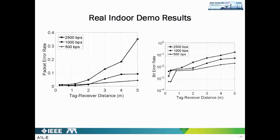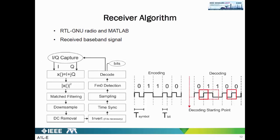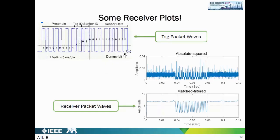We have two plots showing packet error rate and bit error rate for three different bit rates. At lower bit rates we achieve better packet error rate, and we can extend the range further by fabricating better RF front-ends. We also created an online receiver algorithm to receive data live, using FM0 encoding with differential coding. The algorithm takes the absolute square value of the received signal and applies matched filtering to recover the packet.